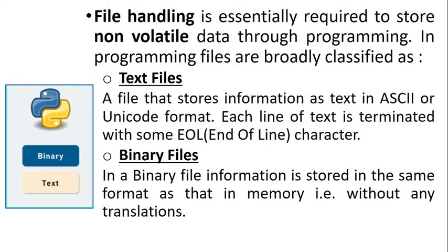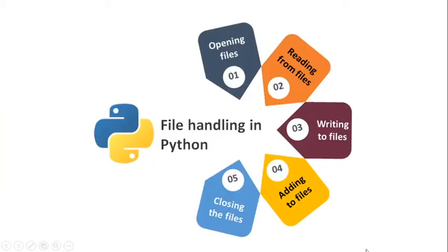In a text file, each line of text is terminated with an end-of-line character — generally a carriage return or newline character. Text files are generally your Notepad files. The various operations we are going to carry out on a file are: opening a file, reading from the file, writing to files, adding (appending) to files, and closing the file — all through our Python program.